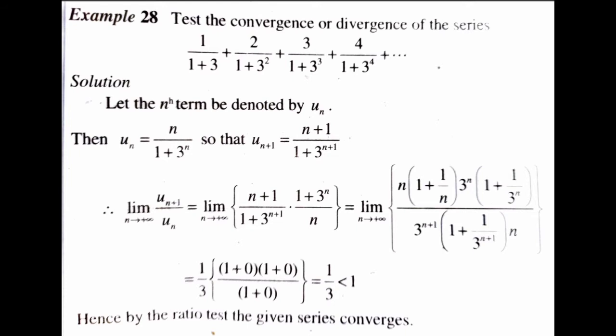Therefore we can find u_(n+1) by replacing n with n+1, giving u_(n+1) = (n+1) / (1 + 3^(n+1)). Therefore, the limit as n tends to infinity of u_(n+1)/u_n equals the limit of [(n+1)/(1+3^(n+1))] × [(1+3^n)/n]. Taking n outside the numerator and 3^n outside the denominator gives n(1 + 1/n) / [3^n(1 + 1/3^n)].